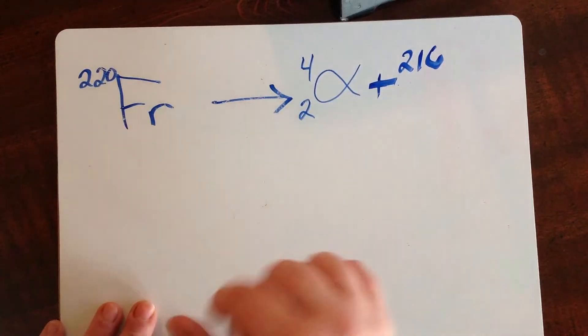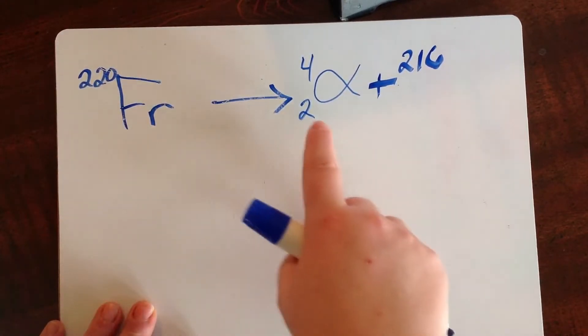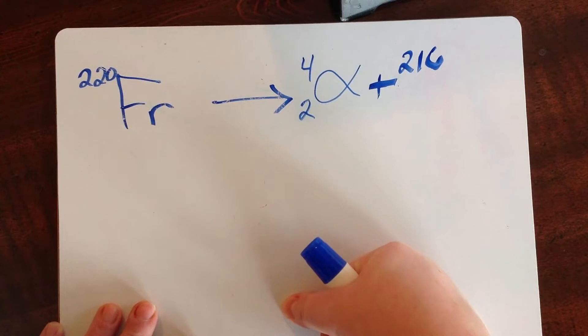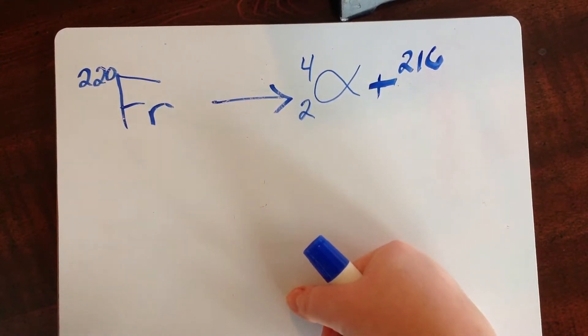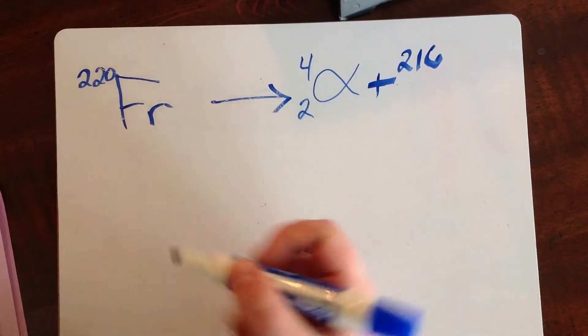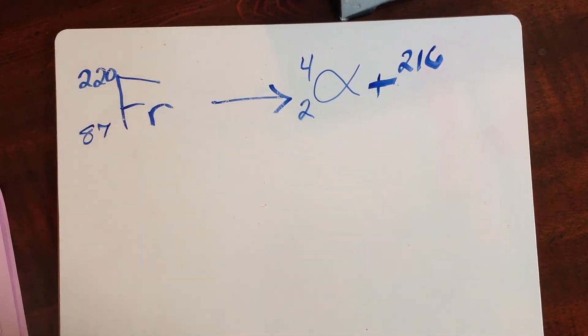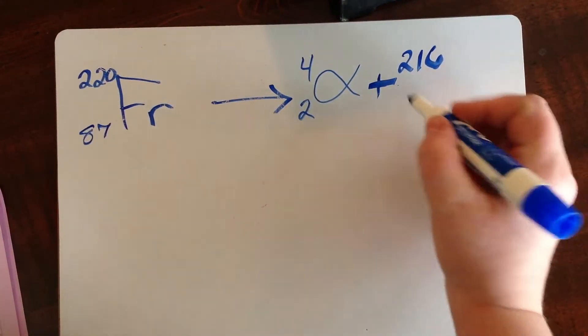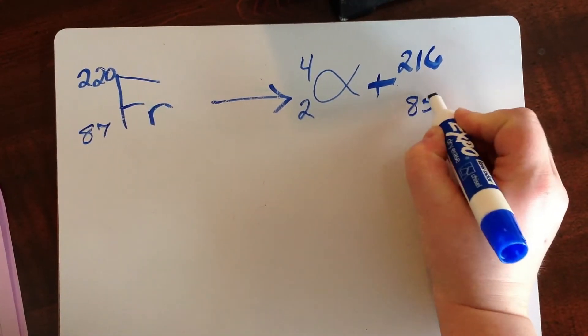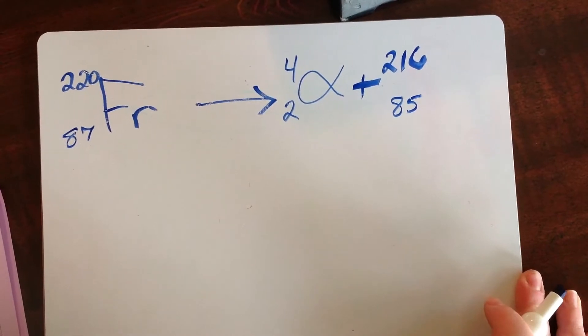And now we need to do the same thing with the subscripts. The sum of the subscripts on the left equals the sum of the subscripts on the right. It doesn't tell us what that subscript is for francium, but we know that those subscripts are the atomic numbers. So if you go to your periodic table and look up francium, francium is atomic number 87. So we can fill that in even though it wasn't given to us. And then 87 is 2 plus 85. So I know the bottom of my other product needs to be an 85.